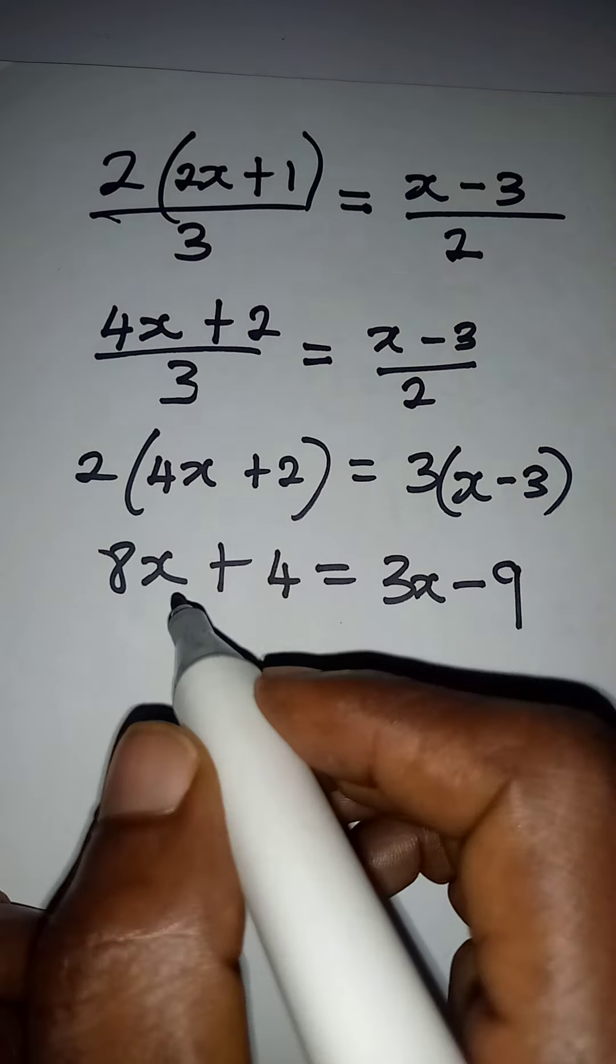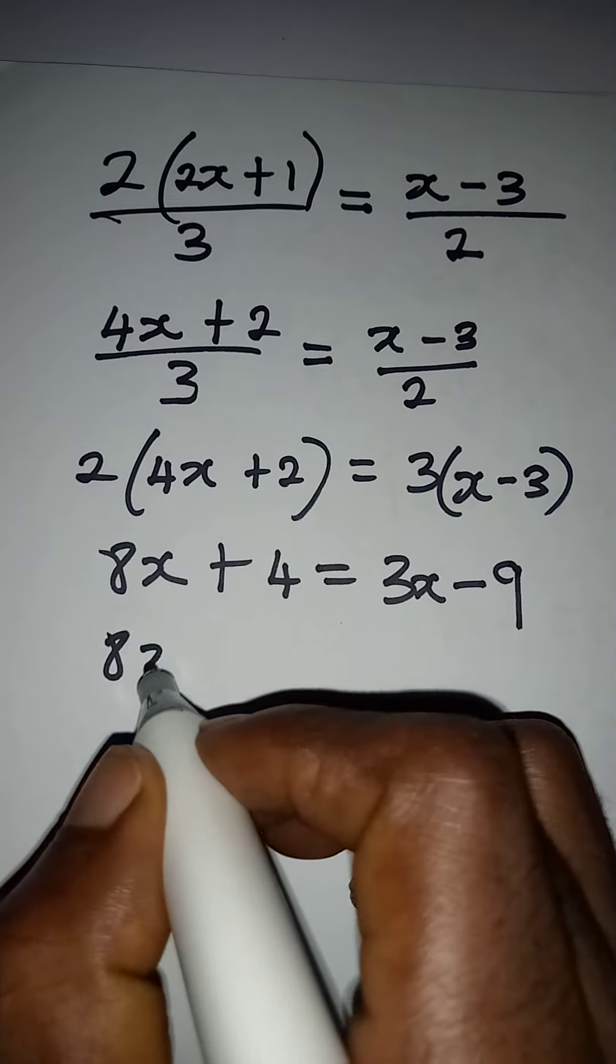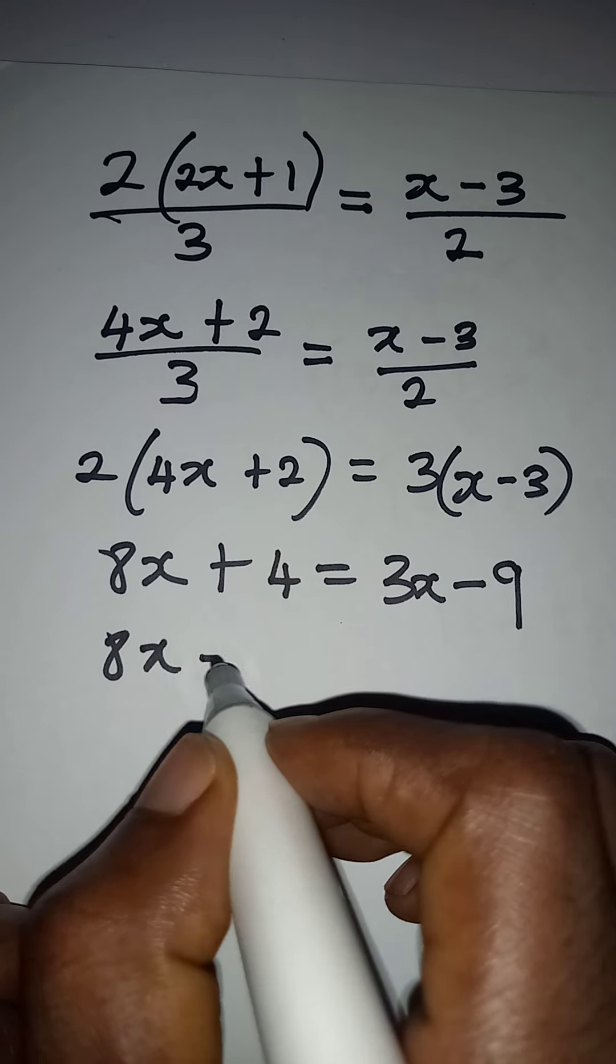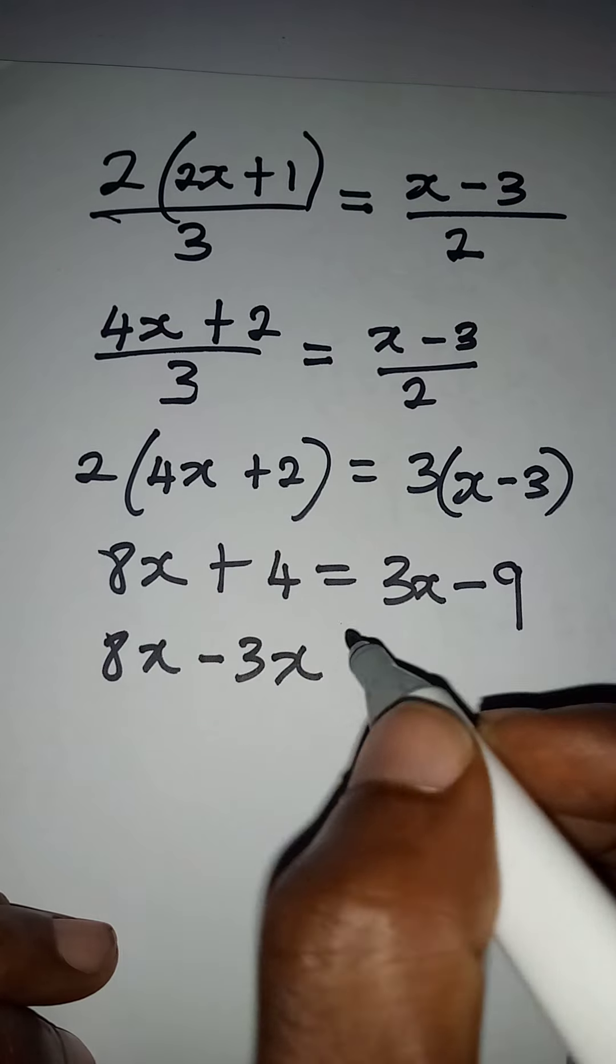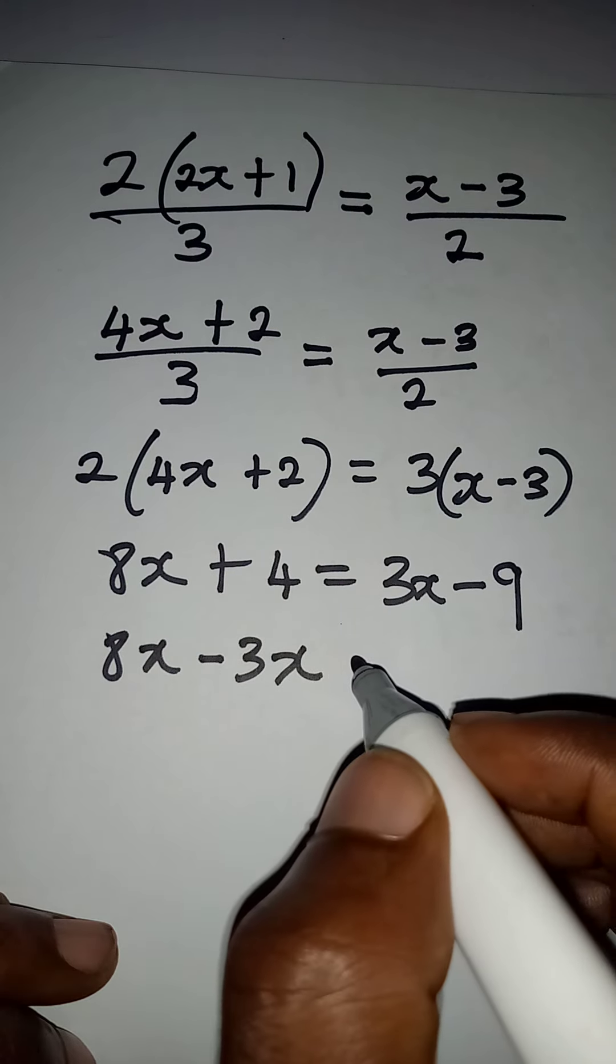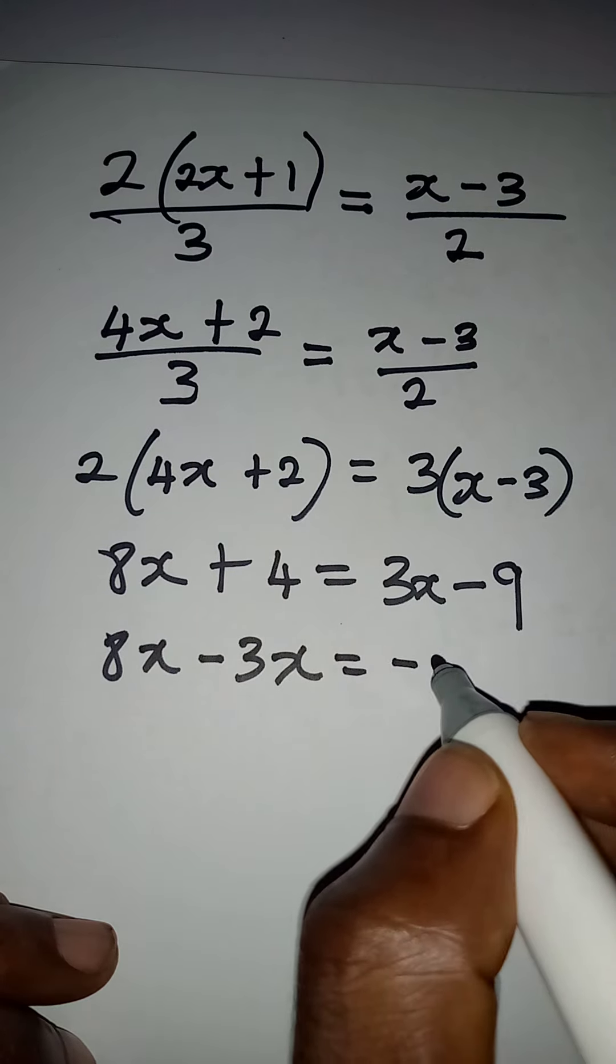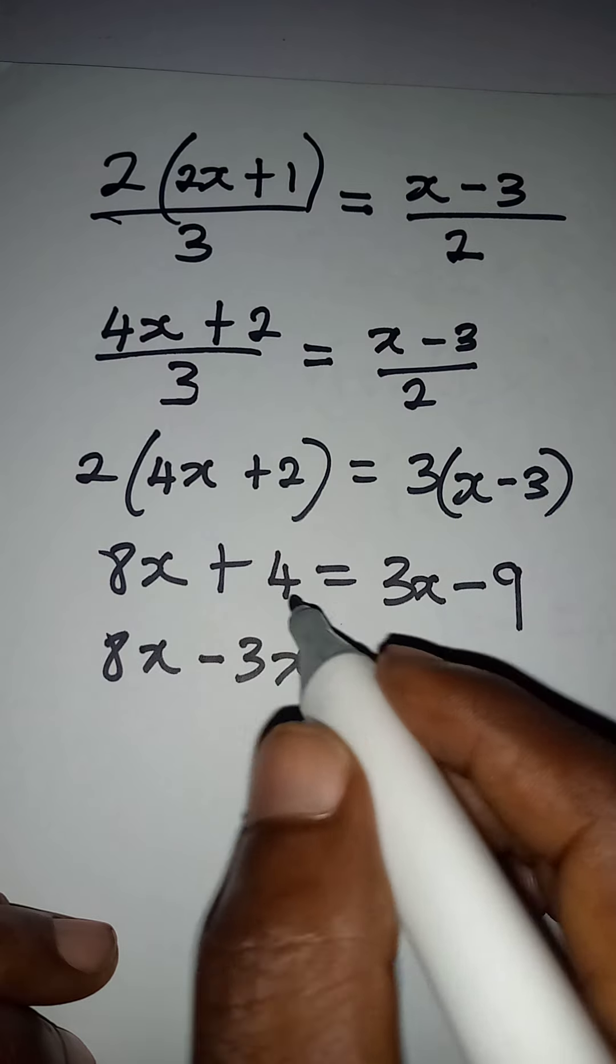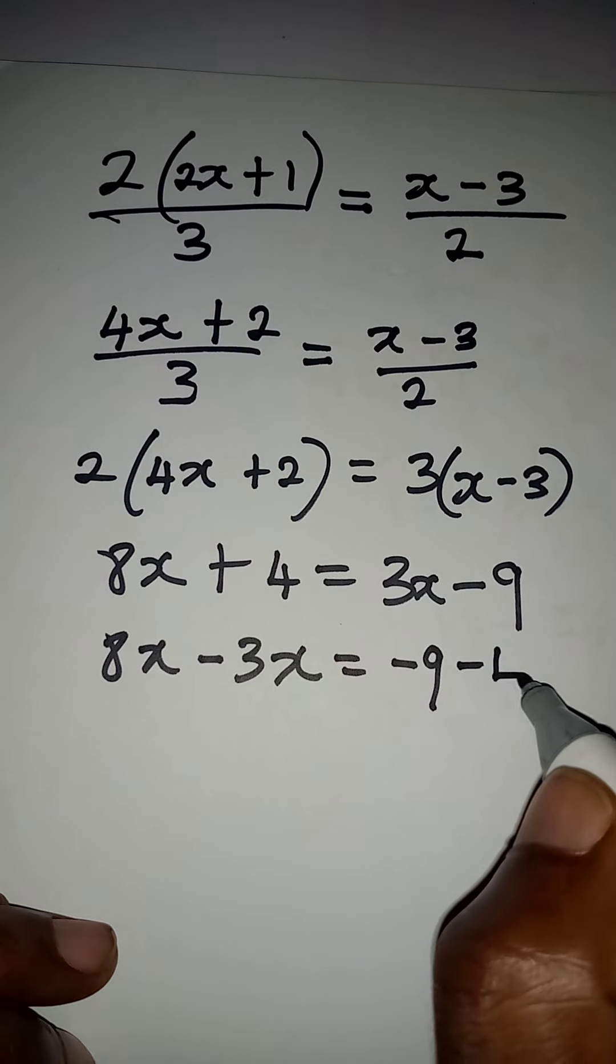Now from here I can collect like terms so that 8x minus 3x will come together. 3x will become minus 3x on the left, then this will be equal to minus 9. Then this plus 4 becomes minus 4 on the right.